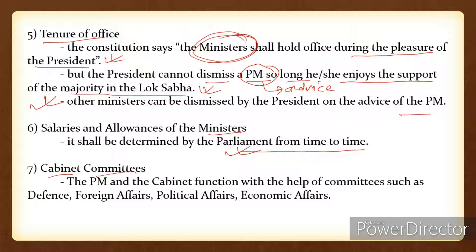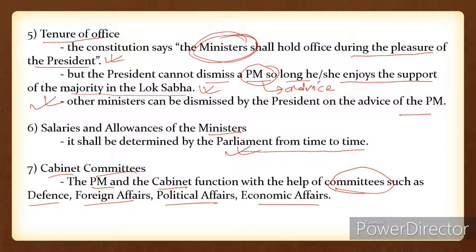The next point is Cabinet Committees. The PM and the Cabinet function with the help of various committees. These include Defence Committees, which handle defence-related activities and policy discussions, Foreign Affairs Committees, which formulate foreign policy, Political Affairs Committees, Economic Affairs Committees, and many other committees with the help of which the PM and Cabinet function.